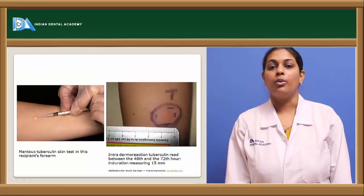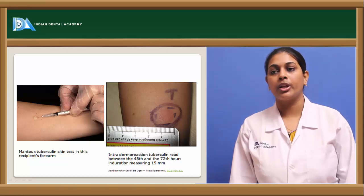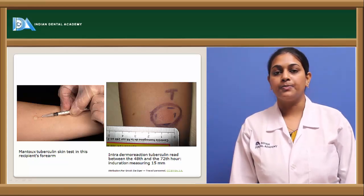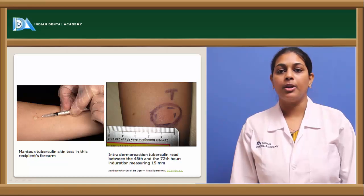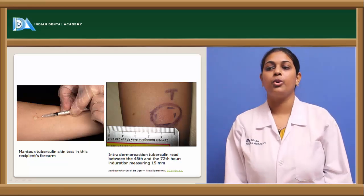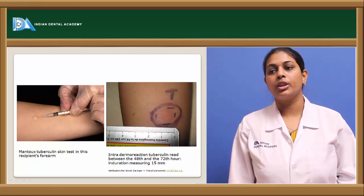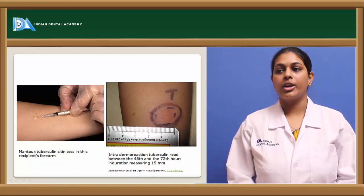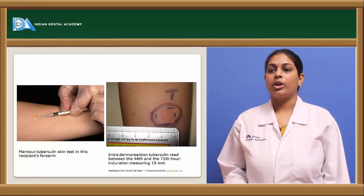A picture shows the Mantoux tuberculoprotein being injected intradermally into the superficial areas of the skin within the epidermis — 0.1 ml of tuberculoprotein. An intradermal reaction for the tuberculoprotein shows a reaction within 48 to 72 hours with induration of 15 mm. This demonstrates the Mantoux or tuberculoprotein test.